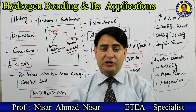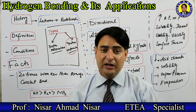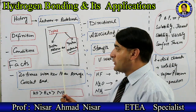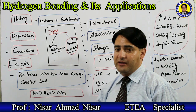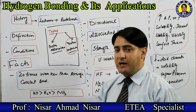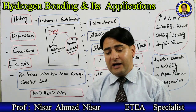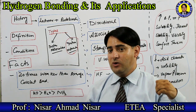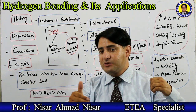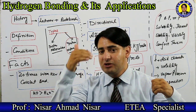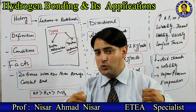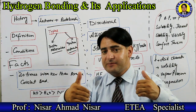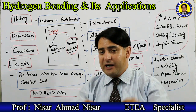Hydrogen bonding can occur within the same molecule or between different molecules. When the partial positive hydrogen of one molecule interacts with the highly electronegative atom — fluorine, oxygen, or nitrogen — of another molecule, it is called intermolecular hydrogen bonding.